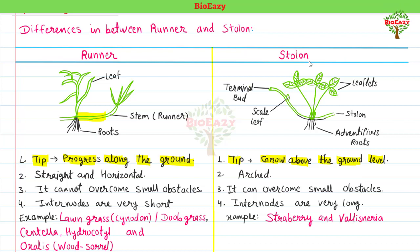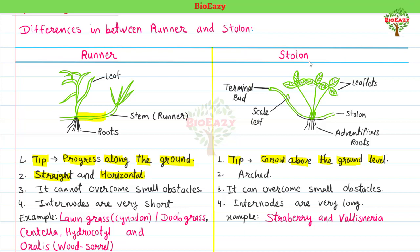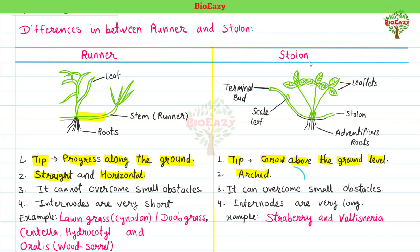Runners are straight and horizontal — they grow straight and horizontal along the surface level of the land. But stolons grow in an arched shape, like this.